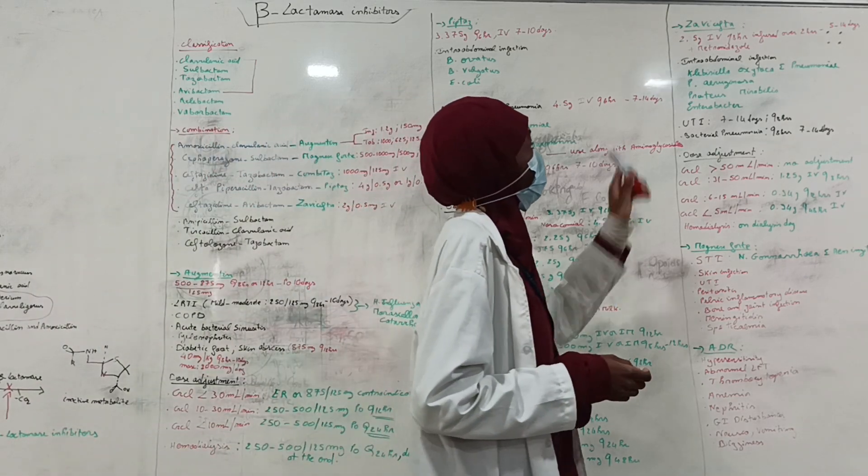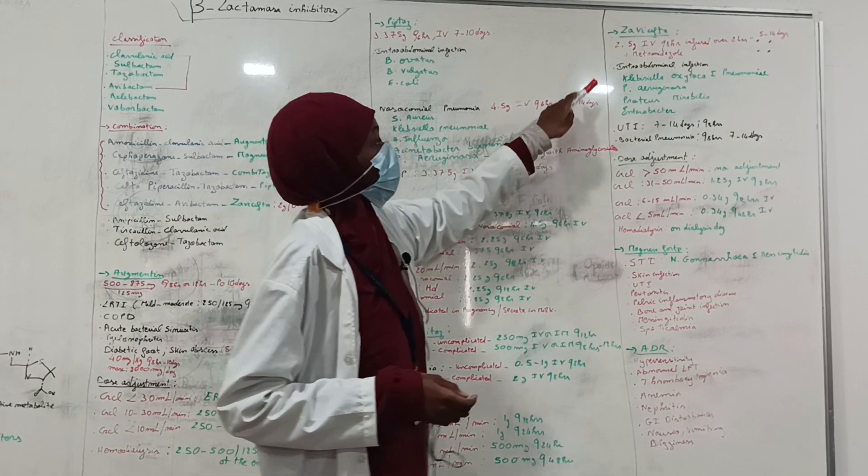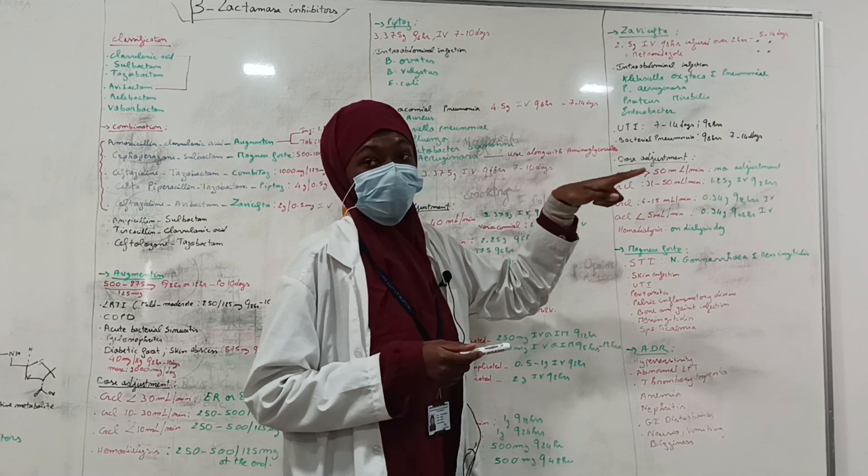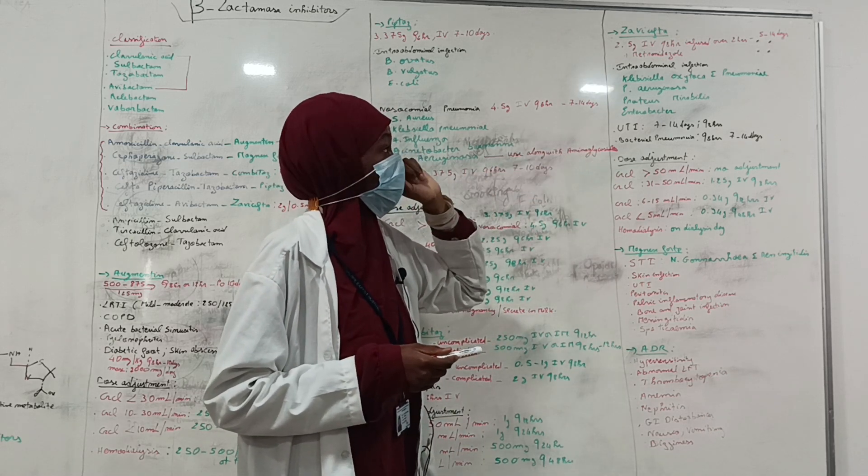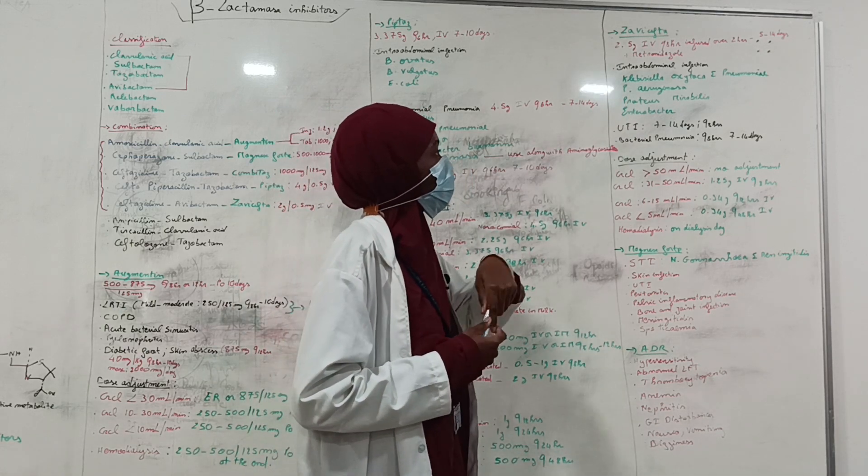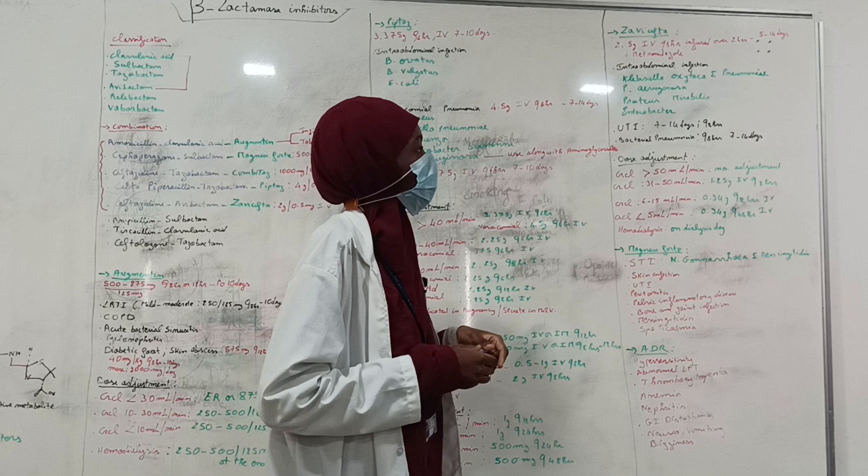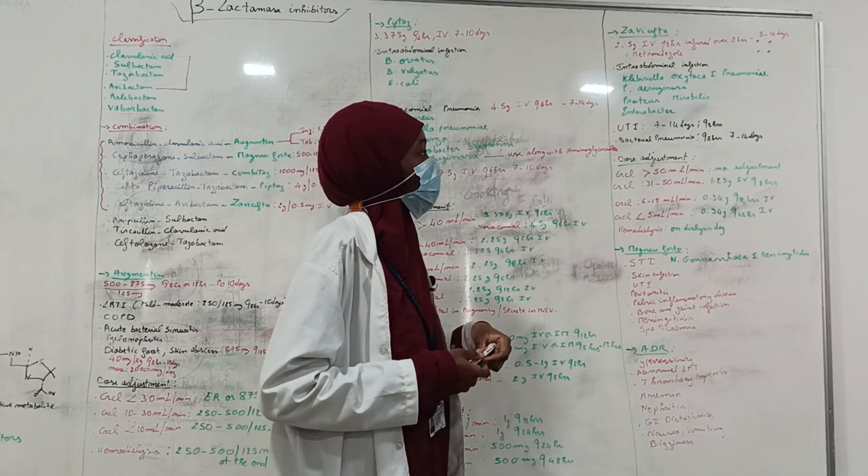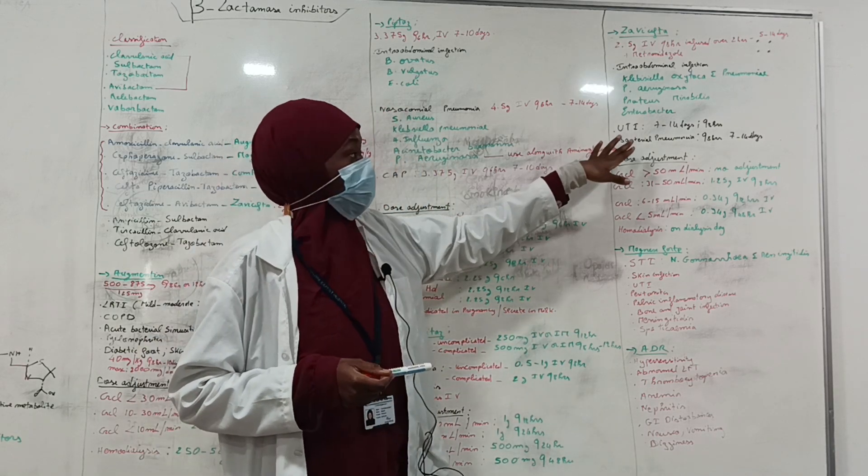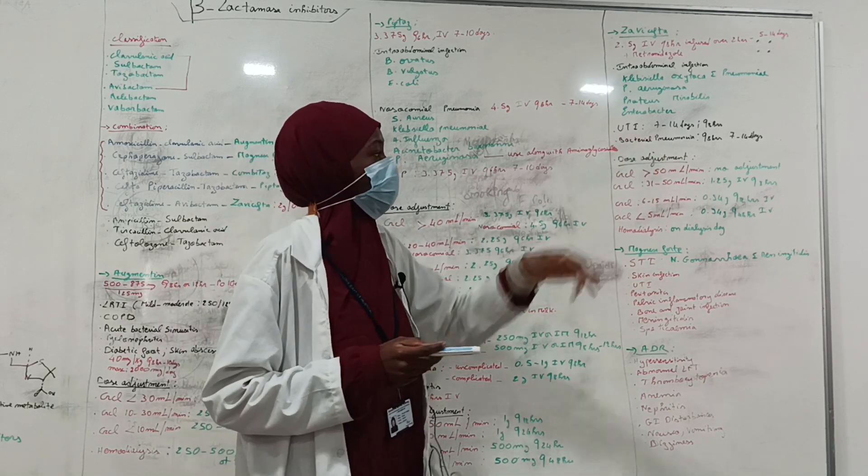When it comes to Zavicefta, which is ceftazidime along with avibactam, a dose of 2.5 g IV every 8 hours, which should be infused over 2 hours for a period of 5 to 14 days, along with metronidazole, is recommended for intra-abdominal infection caused by Klebsiella oxytoca and pneumoniae, Pseudomonas aeruginosa, Proteus mirabilis, and Enterobacter. It's also used for UTI, and for UTI the duration should be between 7 to 14 days every 8 hours. Same thing for bacterial pneumonia.